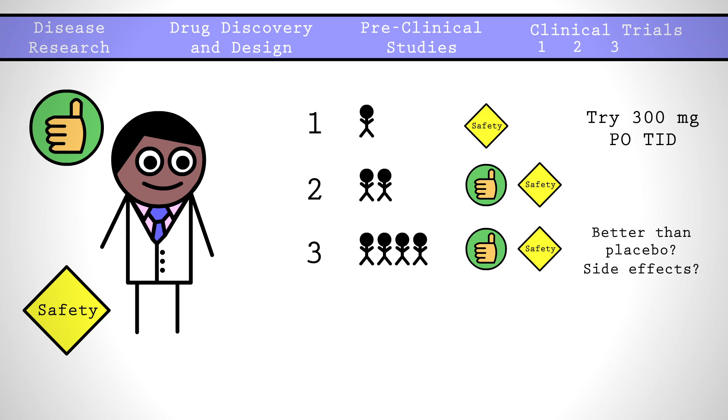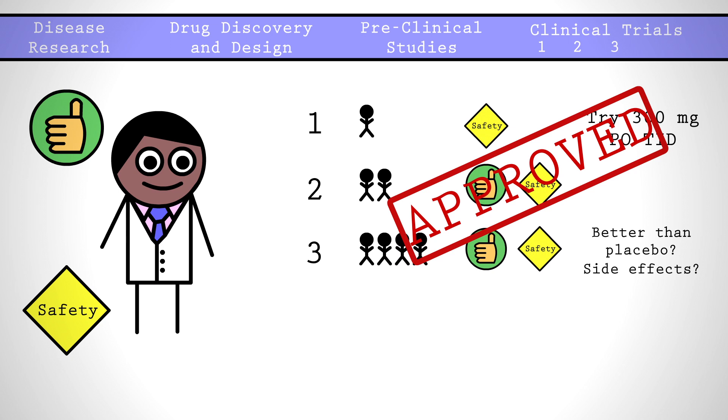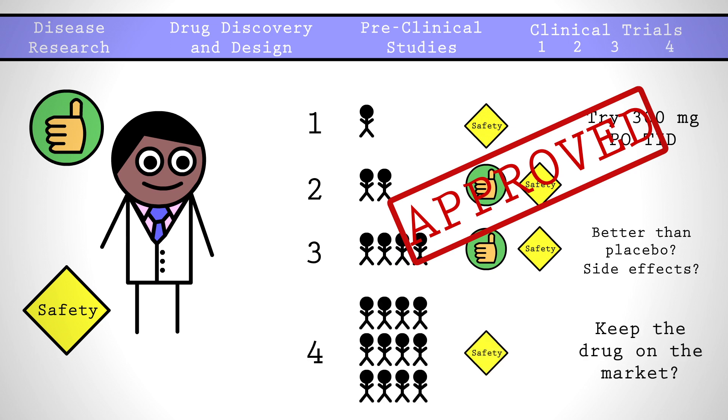If a drug passes all of these steps and the FDA approves it, voila, we have ourselves a new drug. But there is a Phase 4, after a drug is approved, that takes advantage of the even larger sample size of the general public to continue monitoring for side effects and even remove a drug if necessary.